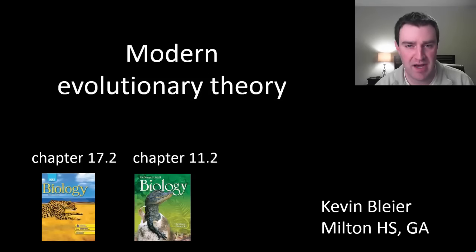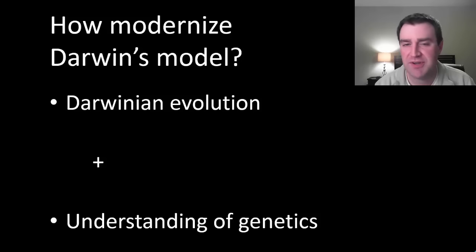In this video I'm going to discuss a more modern update to evolutionary theory. As it turns out, Darwin didn't really understand genetics or how traits were passed on to really understand what was actually changing when populations changed over generations.